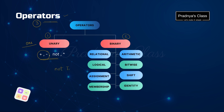If we write 'not True', it will be False — it negates the value. So it operates on only one operand. Similarly, plus and minus can be written as plus 10 or minus 5.